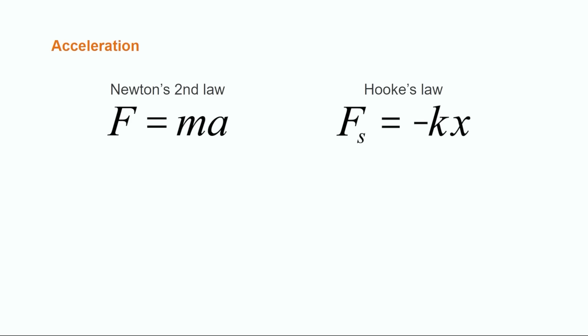To find the acceleration of an object in simple harmonic motion, all we need to do is make a simple substitution using Newton's second law, which tells us that the force on an object is a product of its mass and acceleration. After substitution, we solve for the acceleration, which we can now calculate using the spring constant and the object's mass and displacement.